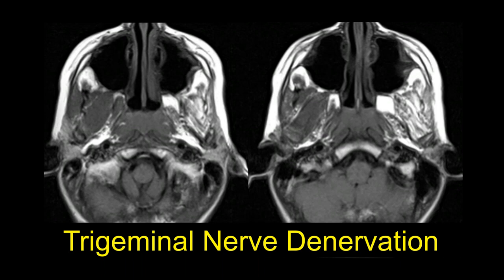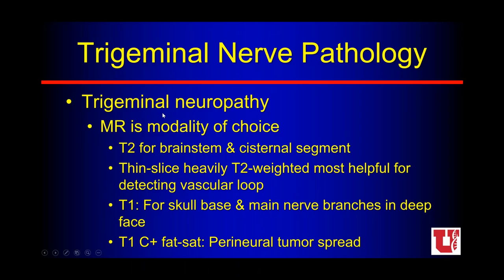For imaging trigeminal neuropathy we prefer MR: T2 CSF-bright sequences — CISS, SPACE, T2 FSE, or FIESTA — for thin-section evaluation of the brainstem and cisternal segments, important for detecting a vascular loop at the root entry or exit zone of the fifth nerve. Pre-contrast T1 is great for evaluating the normal fat we should see in the skull base and around the foramina. Post-contrast MR is the best sequence for perineural tumor spread. CT is useful if you pay close attention to these cranial nerves, but MR is much easier.